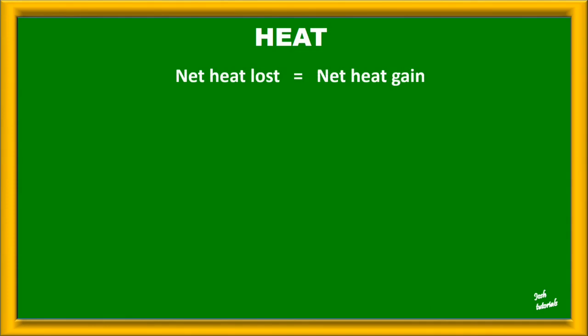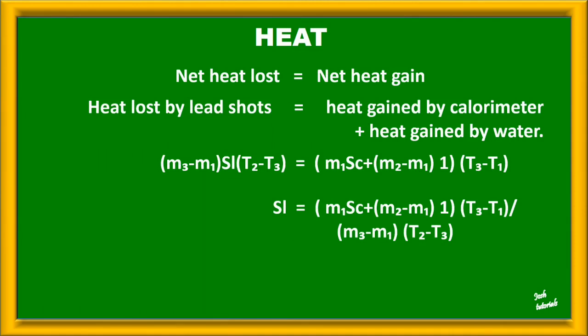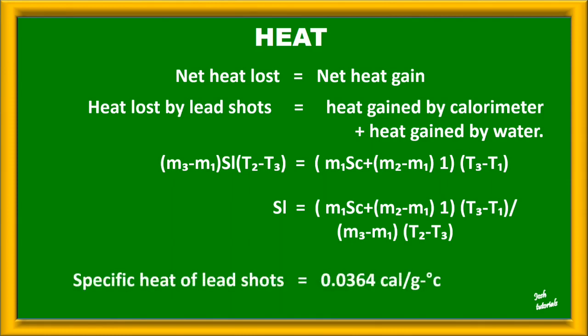Heat lost by the substance is equal to net heat gained. The total heat lost by lead shots is equal to the heat gained by the calorimeter along with the heat gained by water. So we are calculating the specific heat of lead shots to be 0.0364 calories per gram per degree centigrade.